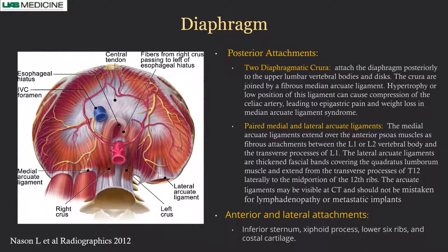Since we did some work on the diaphragm, I'll spend a little more time on it. The diaphragm has a central tendon — this white structure — and then more of the peripheral musculature. It has posterior, anterior, and lateral attachments. Posteriorly it has two diaphragmatic crura, which we all know or always see on CT, and they attach to the upper lumbar vertebral bodies.